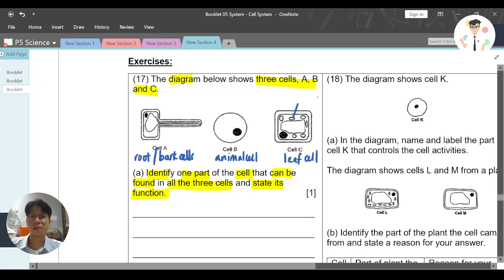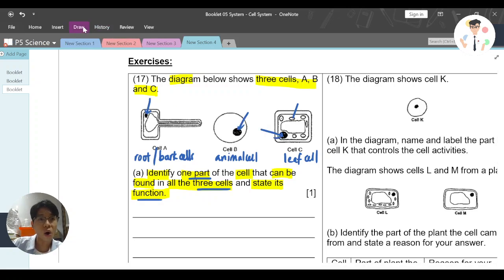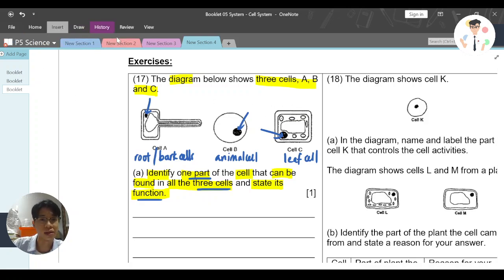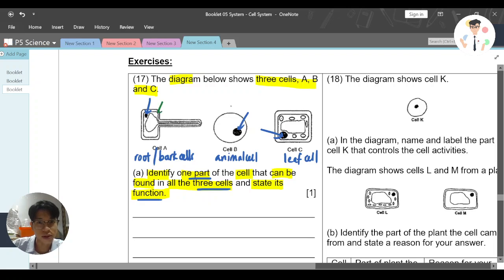Now with that, let's look at part A. We need to find one part that can be found in all three and state the function. The best answer probably will be either nucleus, as you can see - nucleus 1, 2, 3, or another answer you can mention is probably cell membrane. Let me label the cell membrane here, here, or this.